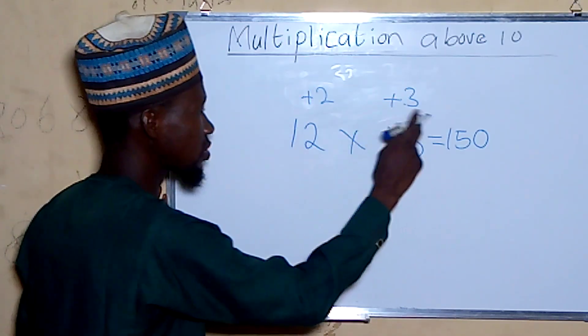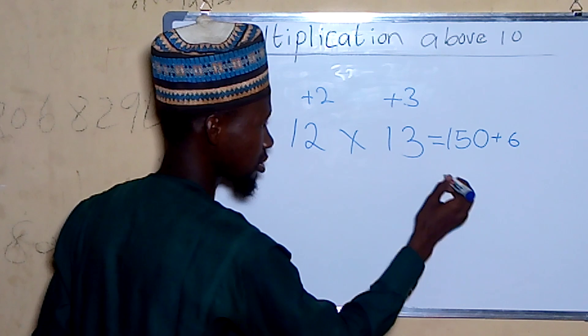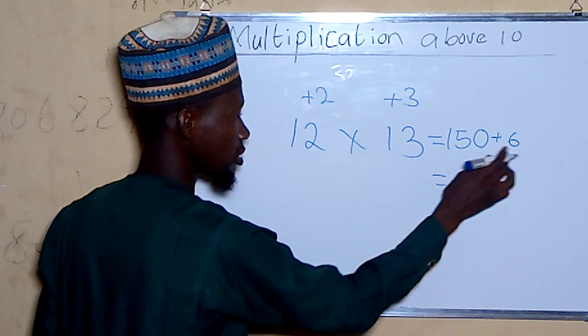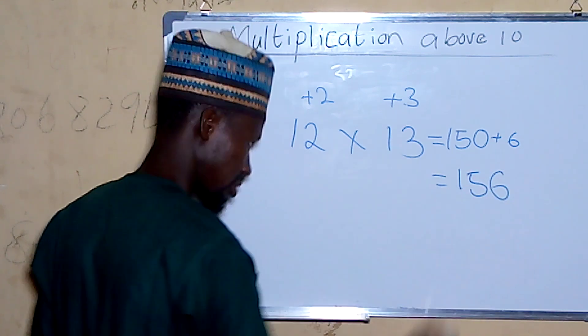2, 3, 6... 156. So 12 times 13 equals 156.